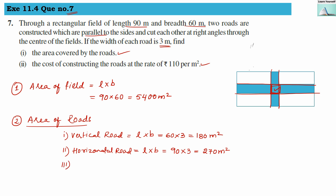Third, we find the area of the center square. Its side length is 3 meters, so area = 3 × 3 = 9 meter square.